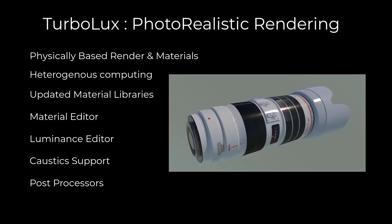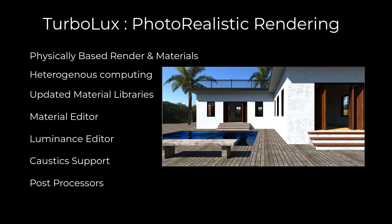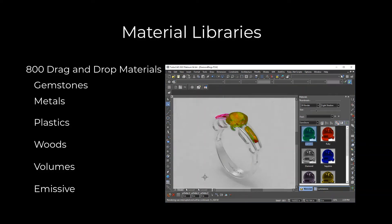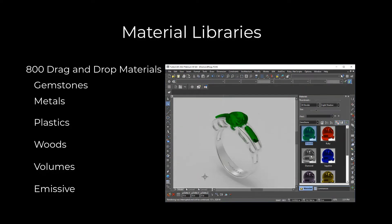Additional features include post processing for tone mapping, gamma correction, and denoisers. Supporting the new rendering engine are over 800 new materials. Simply drag and drop your material over your object to quickly explore the results of different materials on your design.